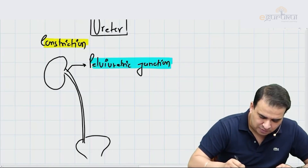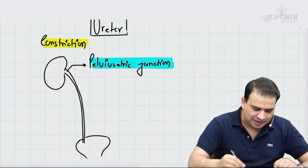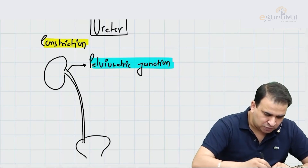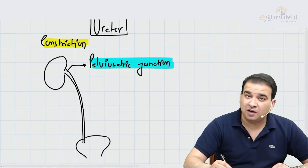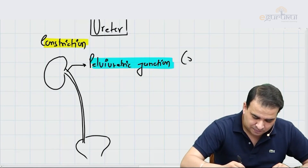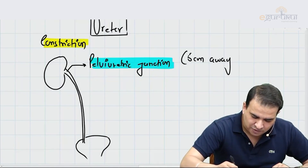At the pelviureteric junction, the renal pelvis becomes the ureter. This is approximately five centimeters away from the hilum of the kidney.